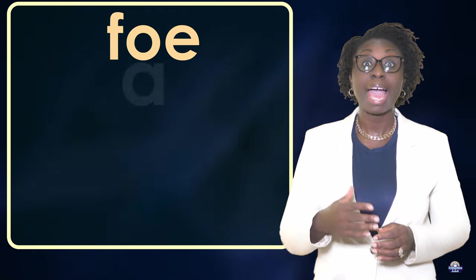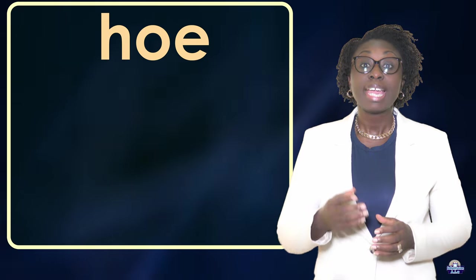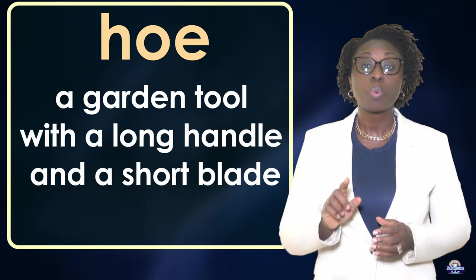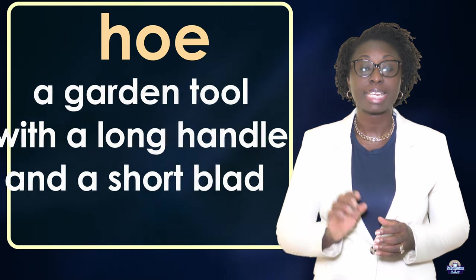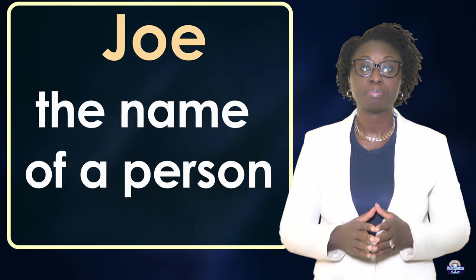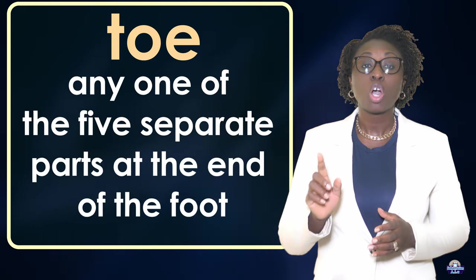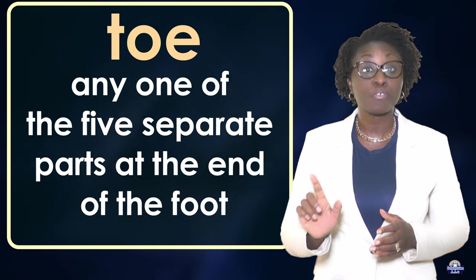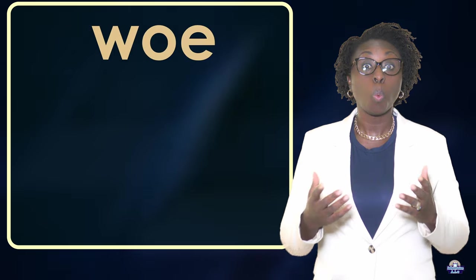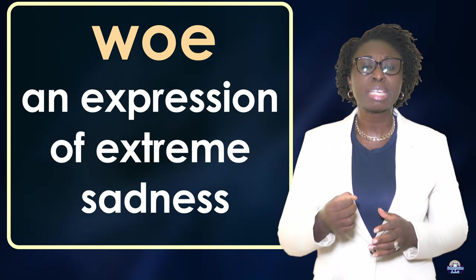Foe: an enemy. Hoe: a garden tool with a long handle and a short blade. Joe: the name of a person. Toe: any one of the five separate parts at the end of the foot. Woe: an expression of extreme sadness.